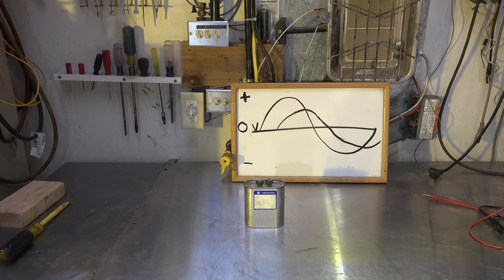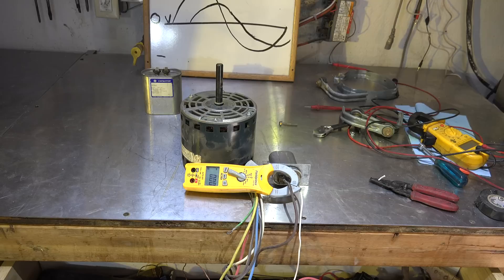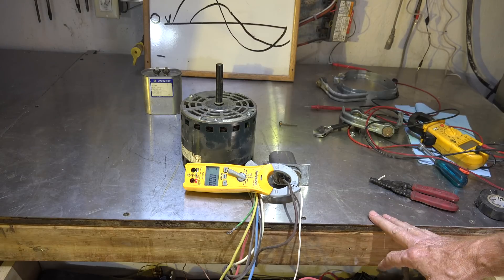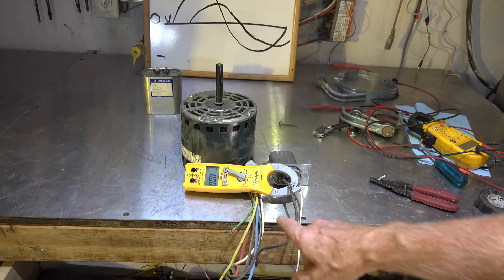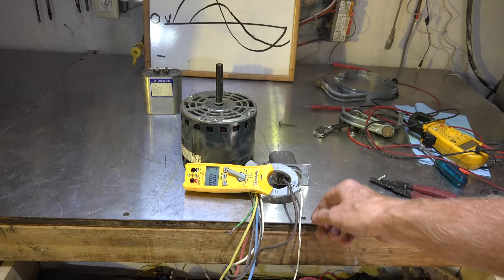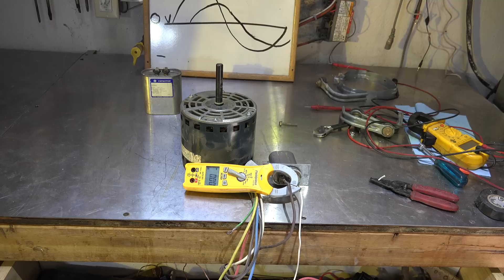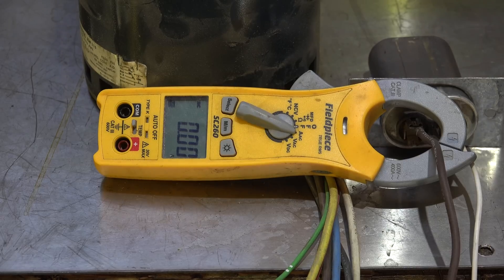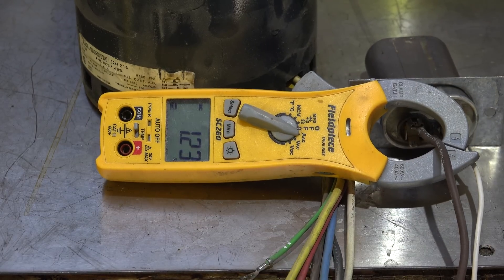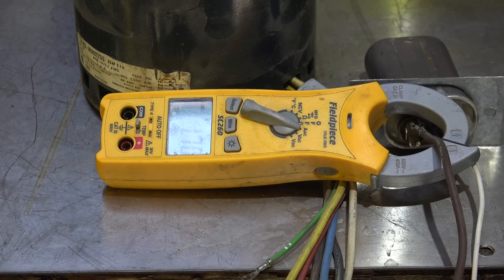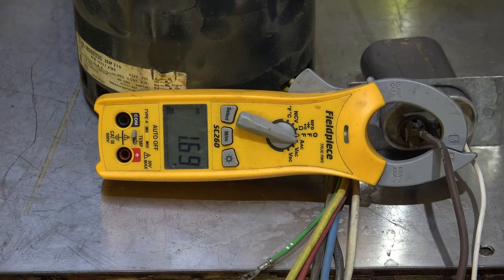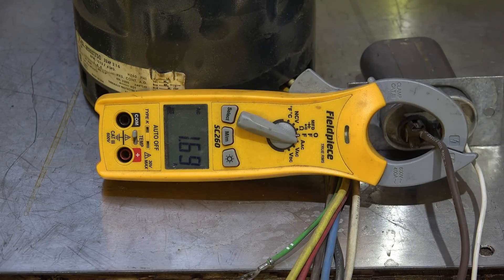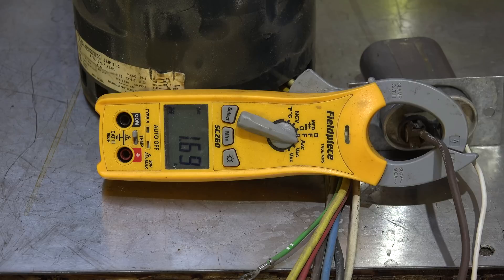Here I'm set up with a motor - PSC motor. It has a run cap on it, and I've clamped the run circuit through the capacitor. Let's see what kind of amp draw we get. Okay, we're going to start the motor. Okay, we're drawing about 1.7 amps through the start circuit.